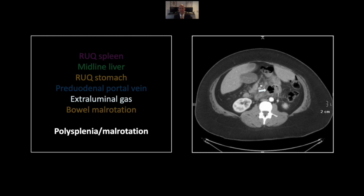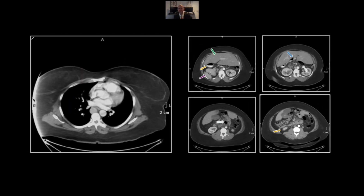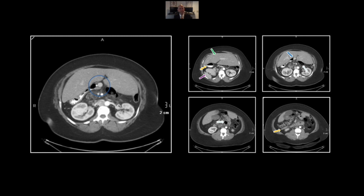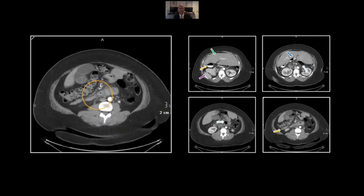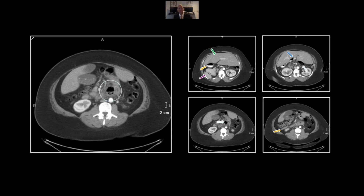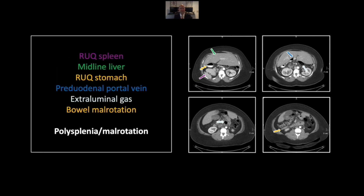There is the extraluminal gas right there. The bowel malrotation is really visible here in the right abdomen. These are redundant loops of duodenum, all stacked into the right upper quadrant, or right retroperitoneum, prior to crossing over as the third portion of the duodenum — clearly a malrotation. It doesn't have the distinct second and third portions of the duodenum as you'd expect. There are the spleen and the stomach, the pre-duodenal portal vein. Watch the loops of small bowel go around and around before crossing the midline, and then ultimately there is the perforation with associated stranding. That is a case of polysplenia with malrotation and an associated perforation.